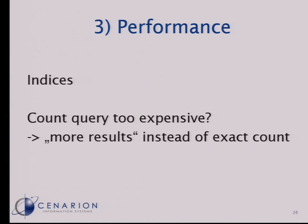Just one note on performance. For large amounts of data, make sure you use indices in your database for all fields that you allow the user to search for, filter for, and even order by — otherwise it will start smoking. And maybe you'll find that your count query gets too expensive and takes too much time. In that case, you can do it like Gmail: instead of telling the user there are 40,000 employees in total, you just tell them you're seeing employees 11 to 20 and there exist more. The user can click forward and see there are also 30, 40 employees, and so on.